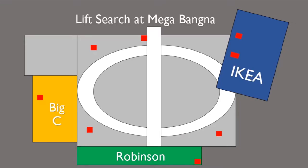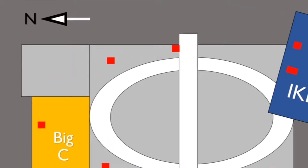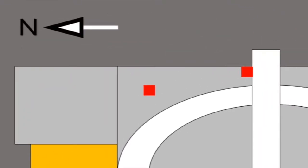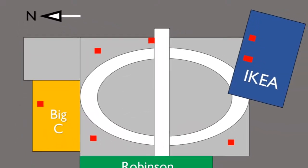Here is part 1 of lift search at Megabanga. This is only in the main part of the shopping centre. Notice in this map, north is this way on the left. And this is very important because this is how I'm going to name the lifts here. It's by a compass.